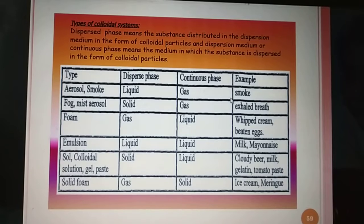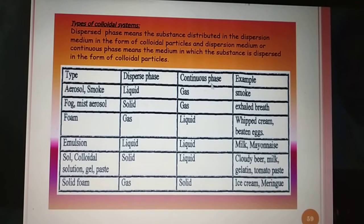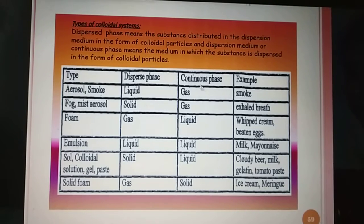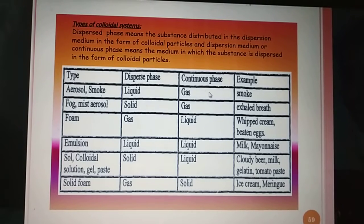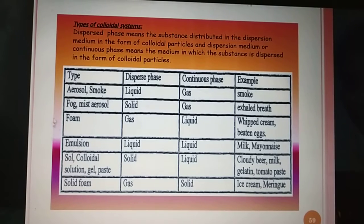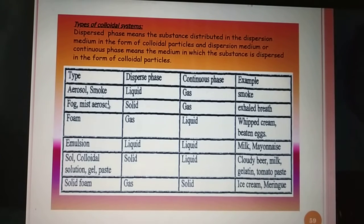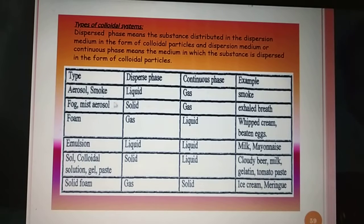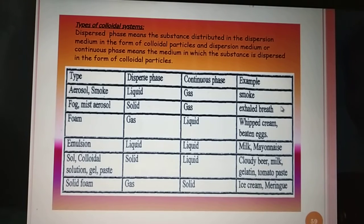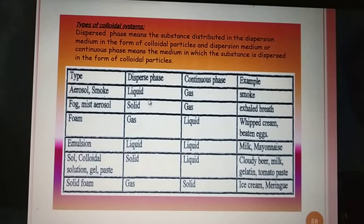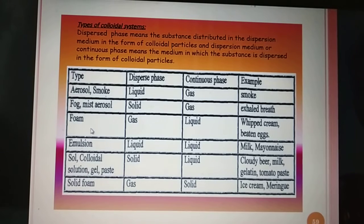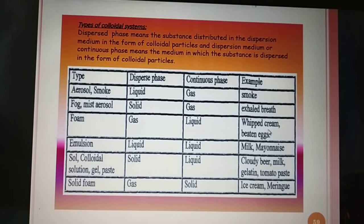When dispersed phase is solid and dispersion medium is gas, the type is aerosol — solid and gas — and the example is fog, mist, or exhaled breath. If gas is the dispersed phase and dispersion medium is liquid, then the type of colloid is known as foam, and the example is beaten eggs, whipped cream, etc.